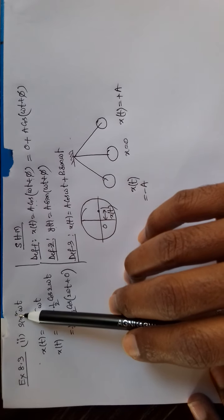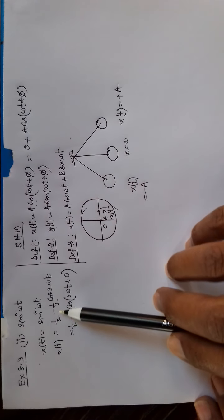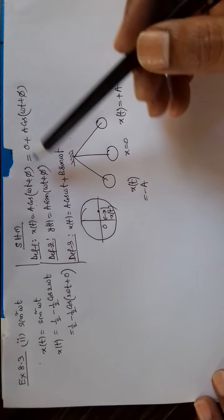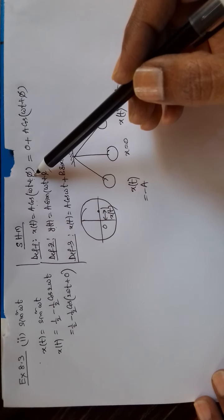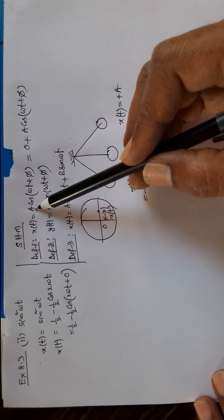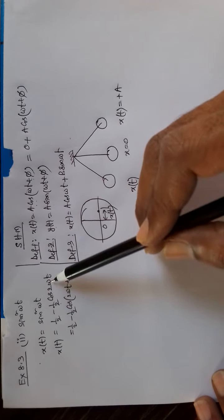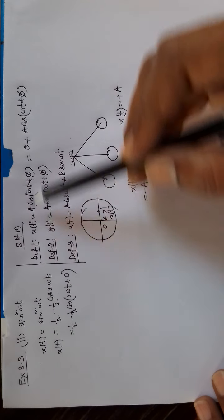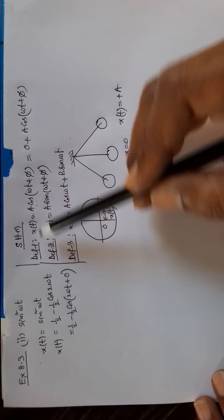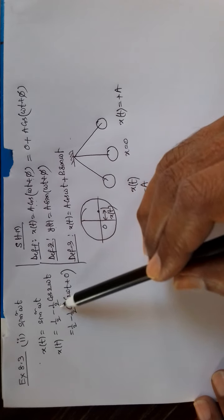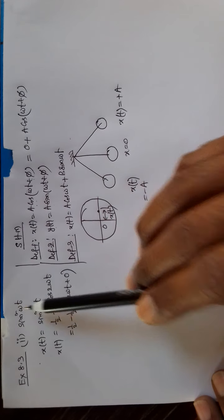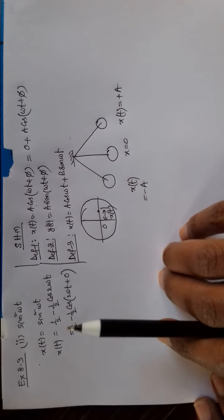Now, see in this problem, this function is written like this. Let us check: this resembles a cos(omega t + phi). Here the amplitude is 1/2, in place of omega t we have 2 omega t, and in place of phi there is nothing, so we can write 0. So this part is resembling that form, and you can say the given function represents simple harmonic motion.